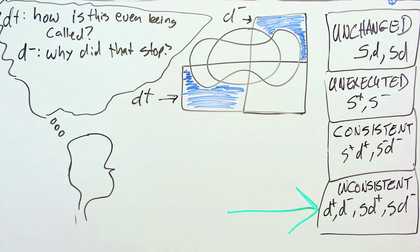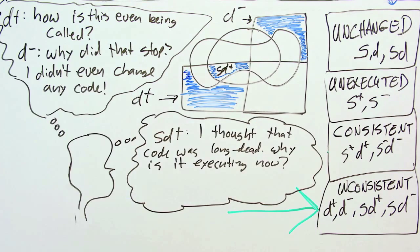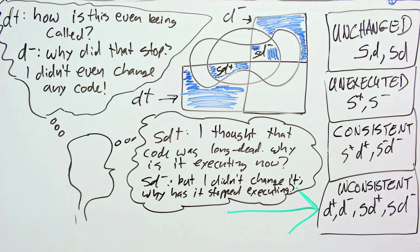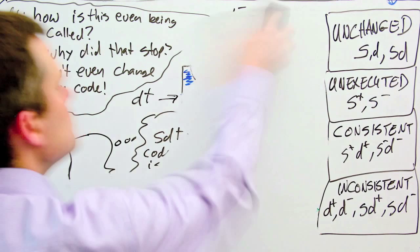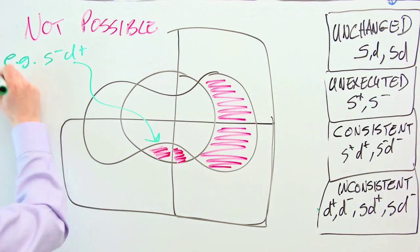The D plus partition represents new calling relationships that were not statically detected, while the D minus partition represents calls that cease to execute without apparent reason, while SD minus represents previously executing code ceasing execution. Just as a note, the final four unannotated partitions do not actually happen in practice.